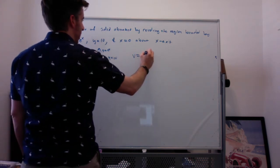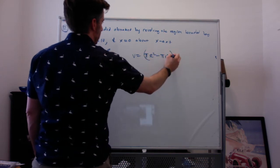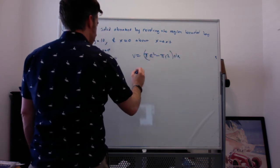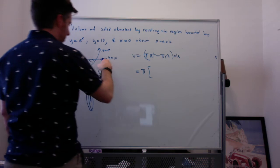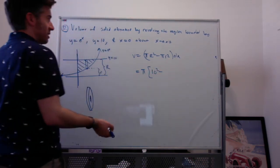I factor out the pi. The big radius is 10. The little radius is e to the x.